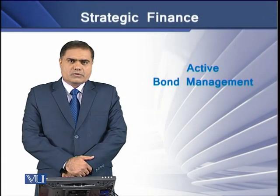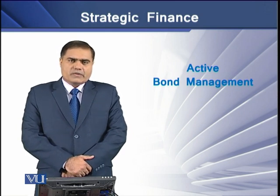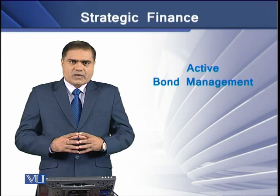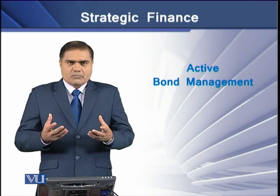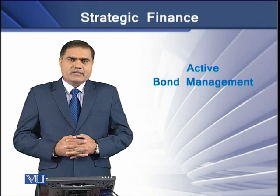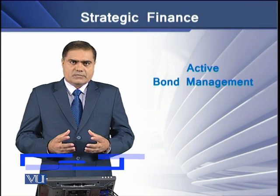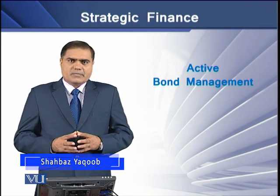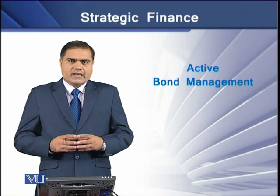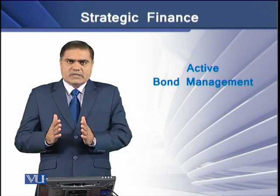There are two sources of potential value in active bond management. The first is interest rate forecasting, in which movement across the overall bond universe is anticipated in terms of interest rate changes. The second source is the identification of mispricing in the bond market, where an analyst may believe that there exists a larger default premium on a given bond and that the bond is mispriced.